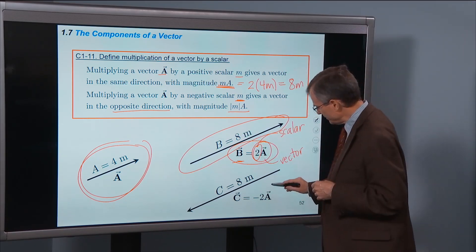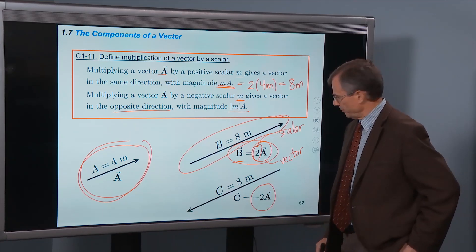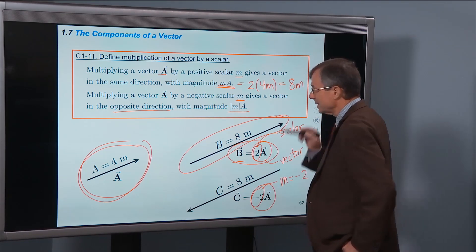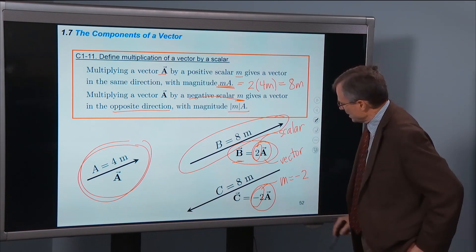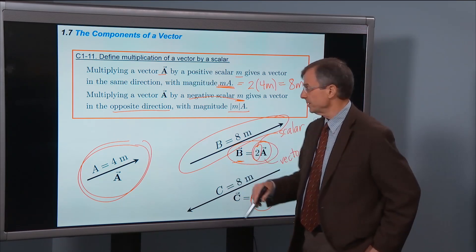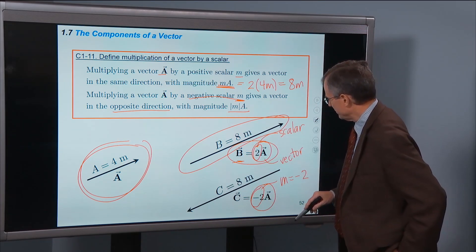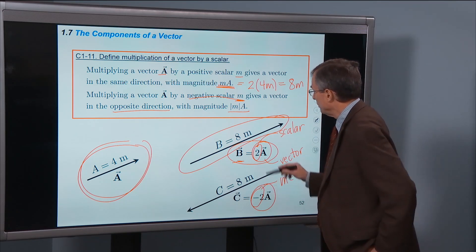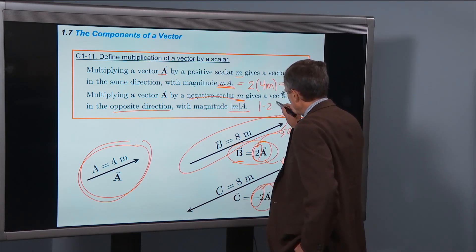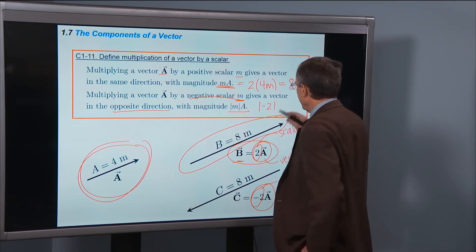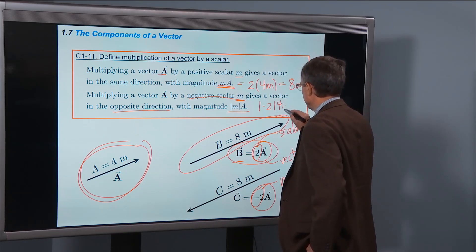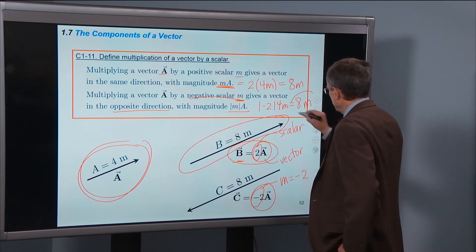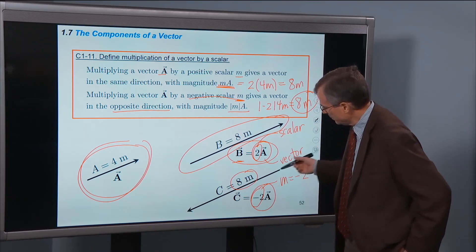with a magnitude of the absolute value of that scalar times the magnitude of A. So if I'm interested in this product, negative 2, so m is negative 2, a negative scalar, and I multiply A, then I'm going to get a vector in the opposite direction with a magnitude absolute value of m times A. I've got it definitely in the opposite direction. And then I need to find the magnitude by taking the absolute value of m. m is minus 2, A, the magnitude of vector A is 4 meters. The absolute value of negative 2 is just 2. And so we get the same magnitude for this case, still 8 meters, but it's in the opposite direction.